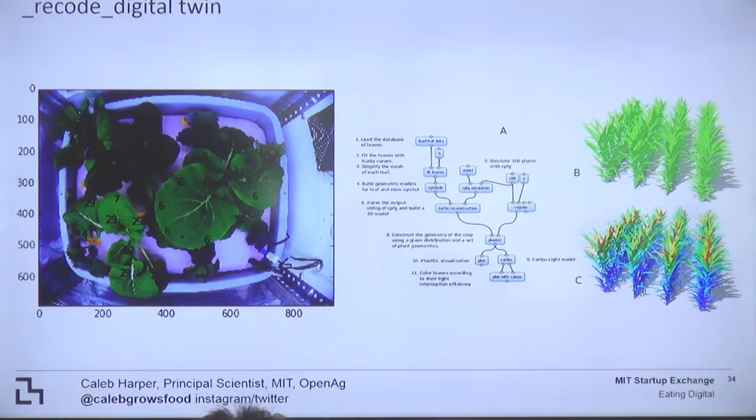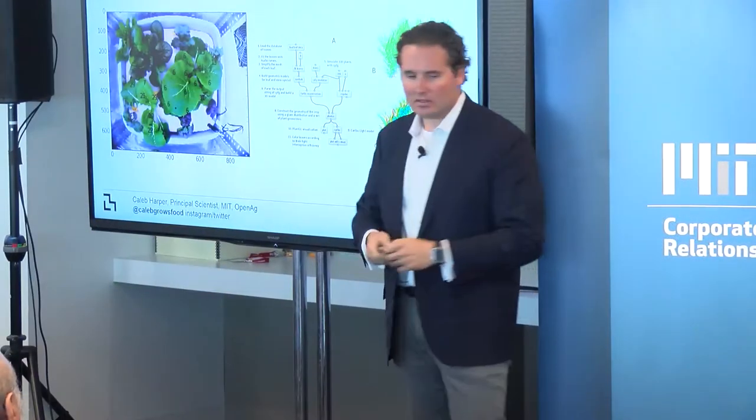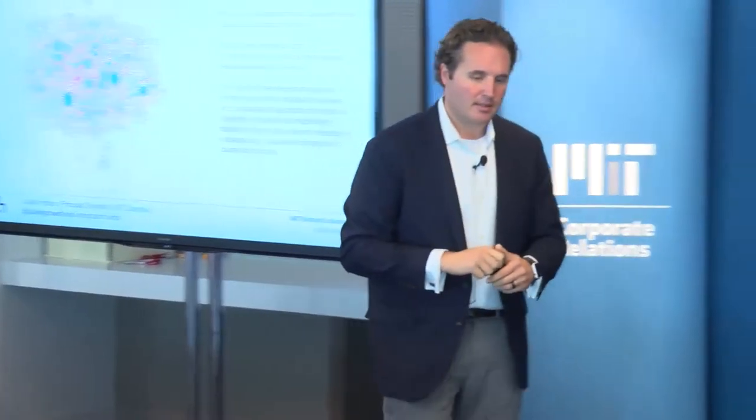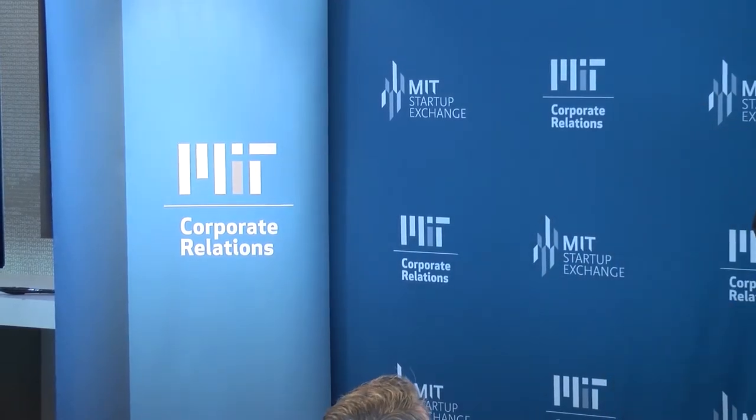We take that model forward into simulation so we can say, if we change things, how would it change? I mentioned reprogrammable flavor — we're also starting to work on this with nutrition. A single basil plant has 303 chemicals with 974 disease correlations. A basil could be designed as a pre-diabetic basil or one good for heart disease. We have a collaboration with Northeastern and Harvard linking the Nurses' Study — the longest longitudinal health study for what nurses ate and its correlations to diabetes and heart disease — with chemicals from what we ate, to program food to respond accordingly.